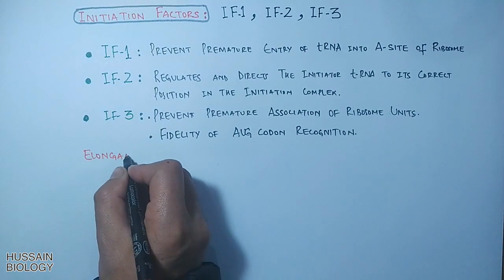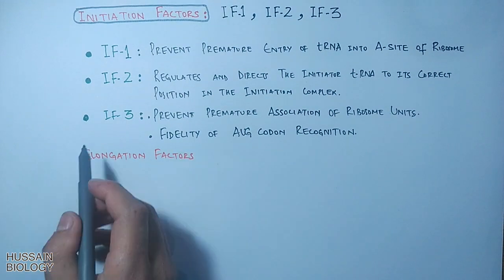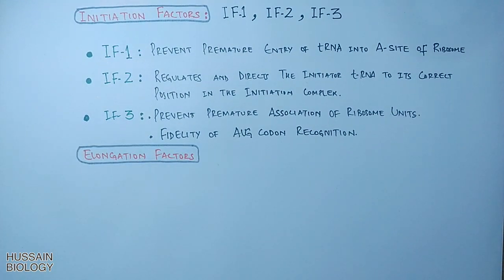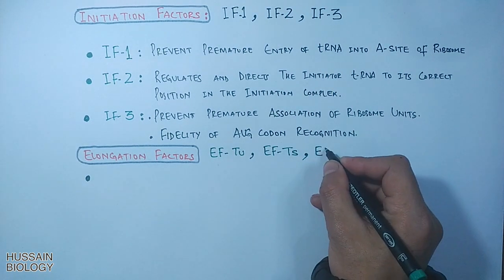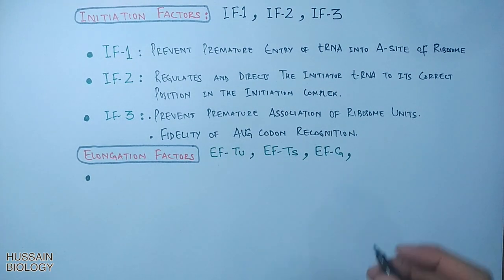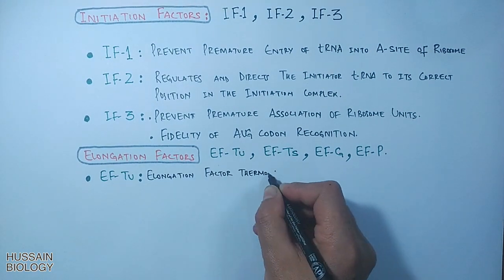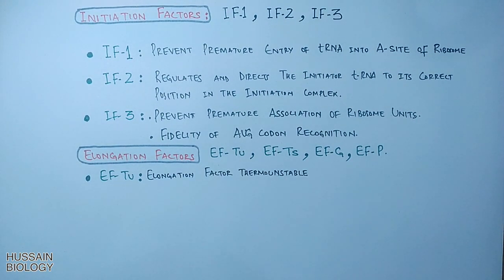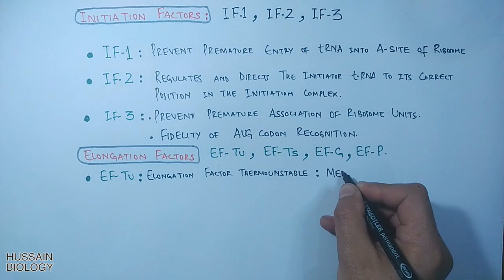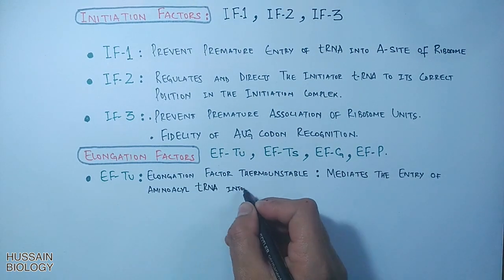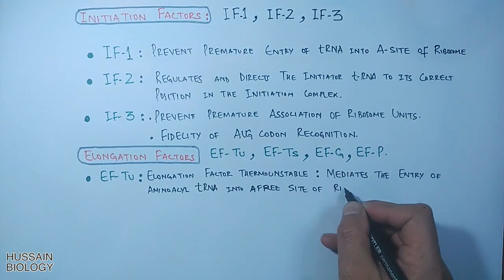Now let's move to the elongation factors. Prokaryotes have four elongation factors for translation: EF-Tu, EF-Ts, EF-G, and EF-P. EF-Tu is the elongation factor thermo unstable — this factor mediates the entry of aminoacyl-tRNA into the A site of the ribosome.